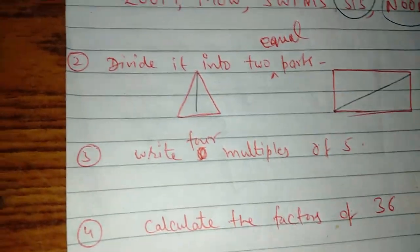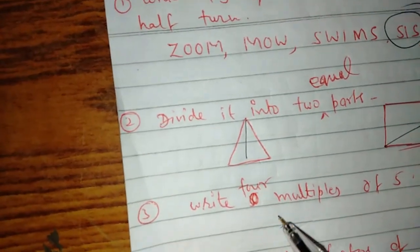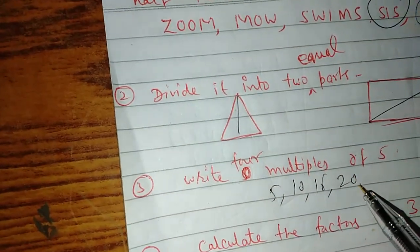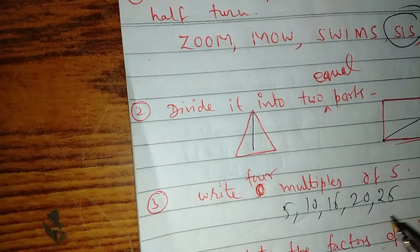Write four multiples of five: five, ten, fifteen, twenty, twenty-five, thirty.